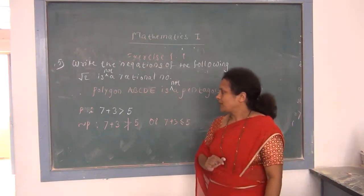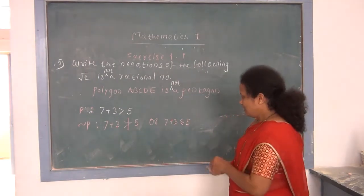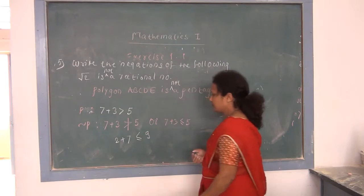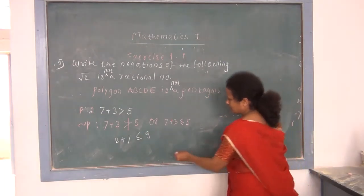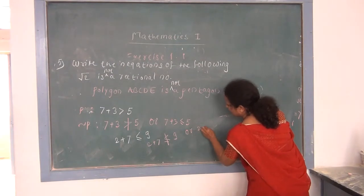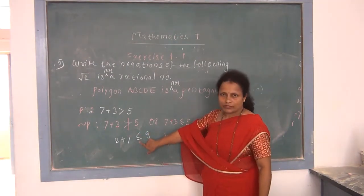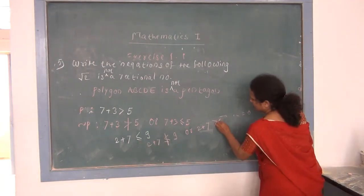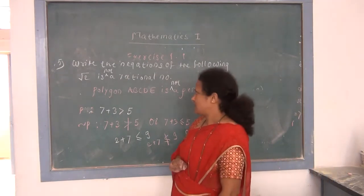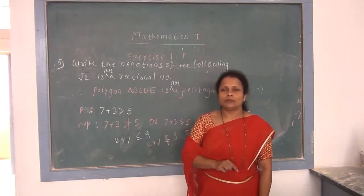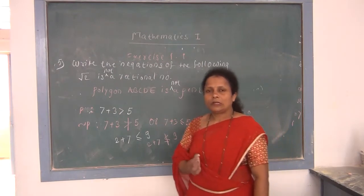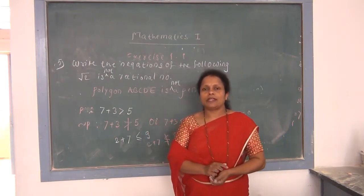So in both ways you can write the negation of an inequality. For example, if the inequality is '2 + 7 ≤ 9,' its negation is either '2 + 7 is not less than or equal to 9,' or '2 + 7 > 9.' In the next lecture we will see statement patterns, logical equivalence, tautology, contradiction, and contingency.